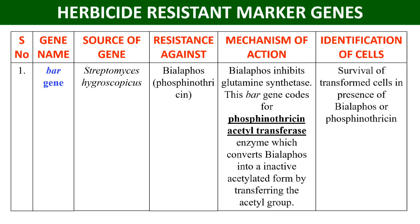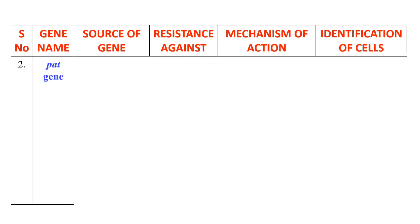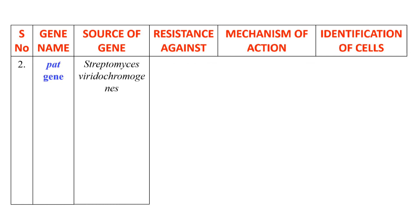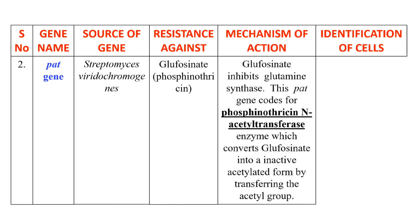The next example is the PAT gene. The source is Streptomyces viridochromogenes, and it provides resistance against glufosinate, which is phosphinothricin. The mechanism of action: glufosinate inhibits the enzyme glutamine synthetase.